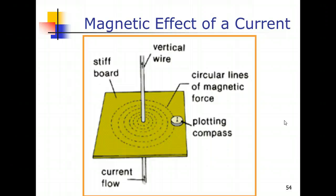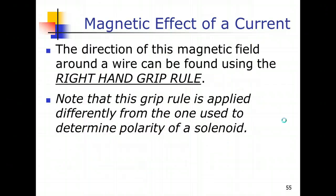For a permanent magnet, the direction of the magnetic field lines moves from the north to the south pole when we are talking about outside of the magnet itself. Now, how about for this particular case? To determine the direction of the magnetic field lines around the vertical wire, we have to use the right-hand grip rule.